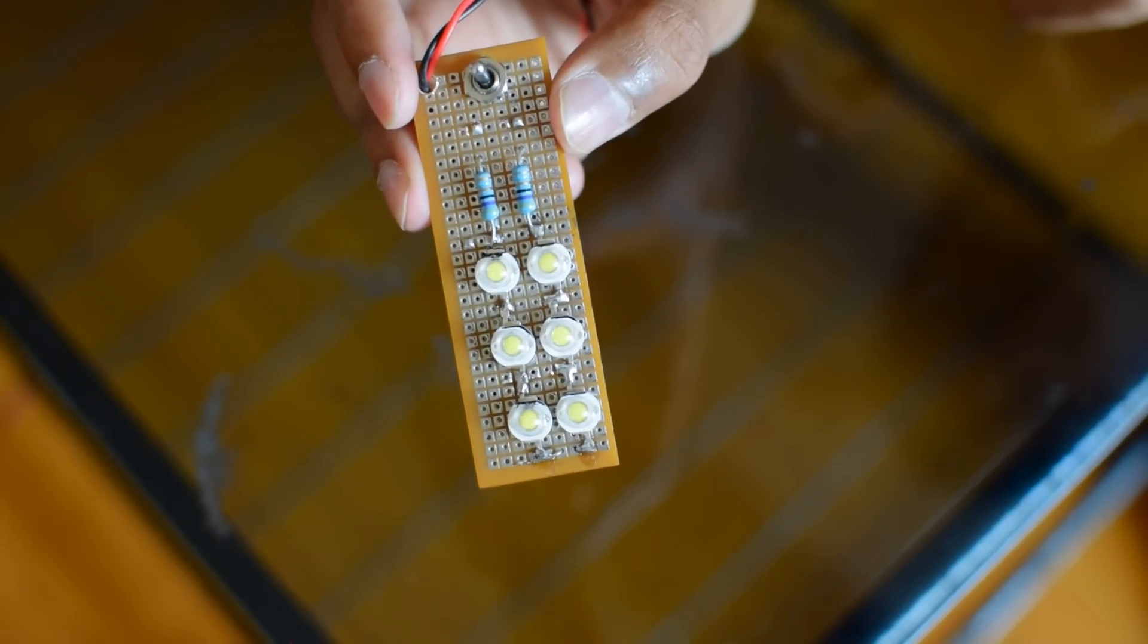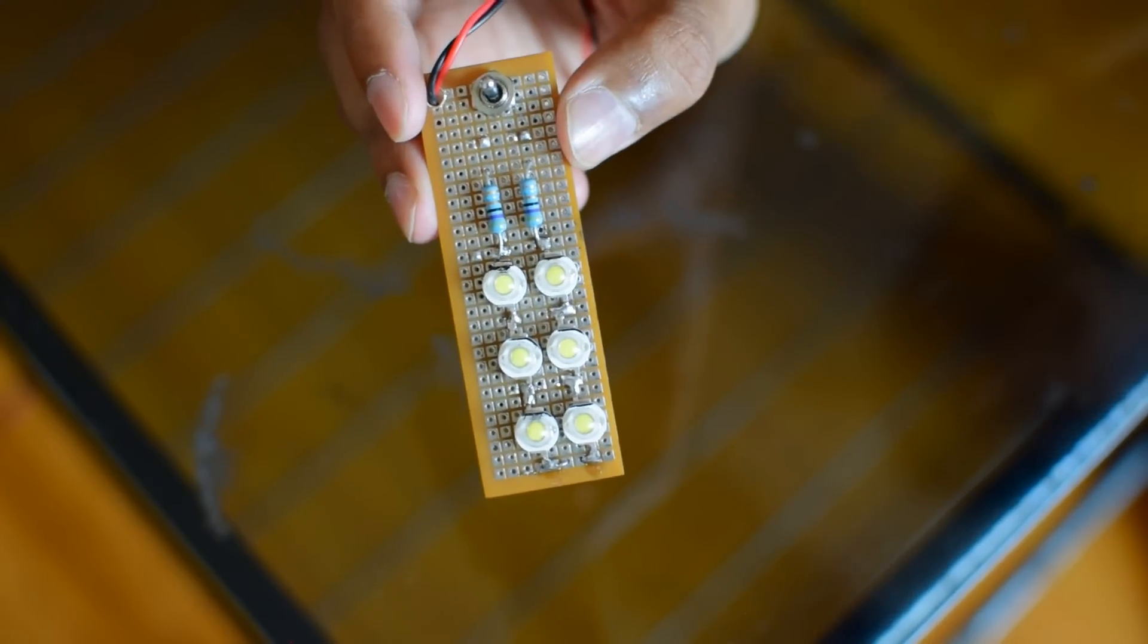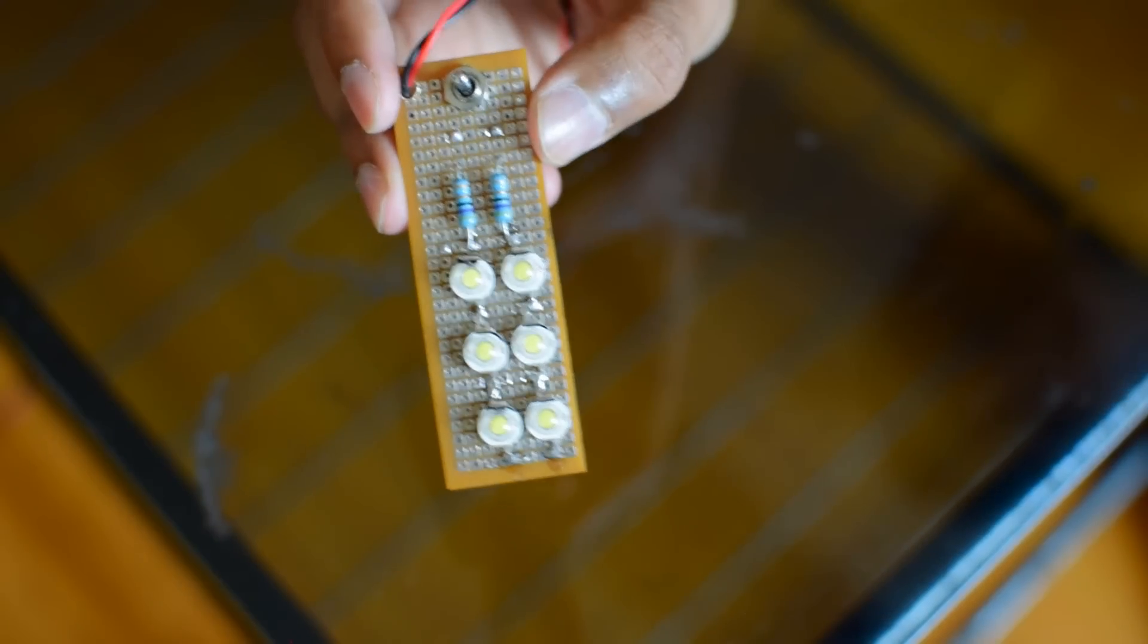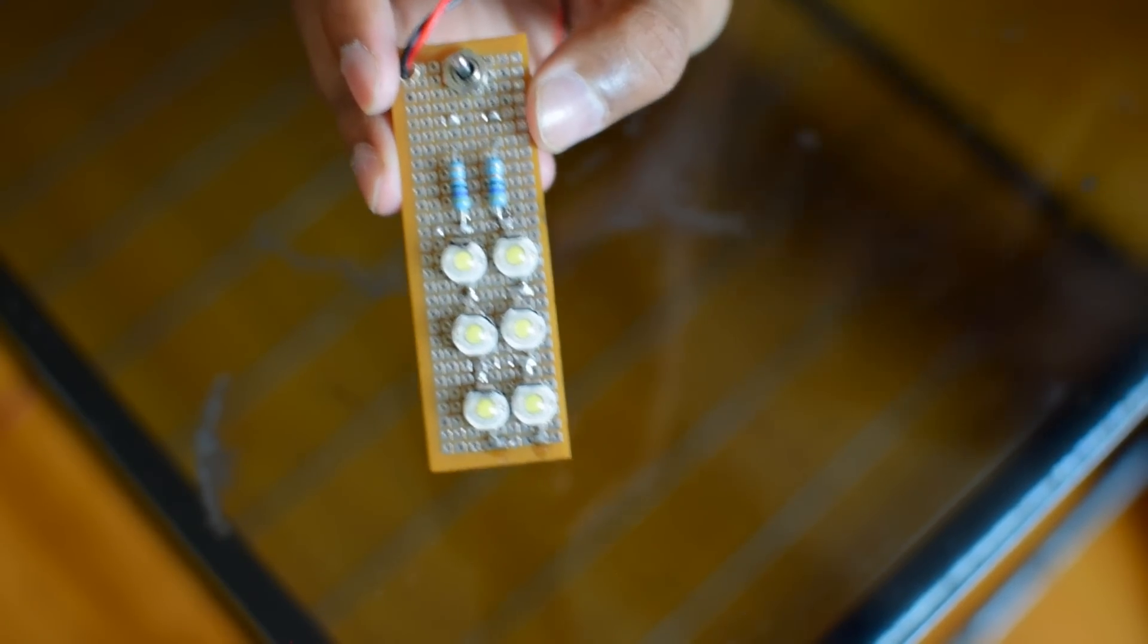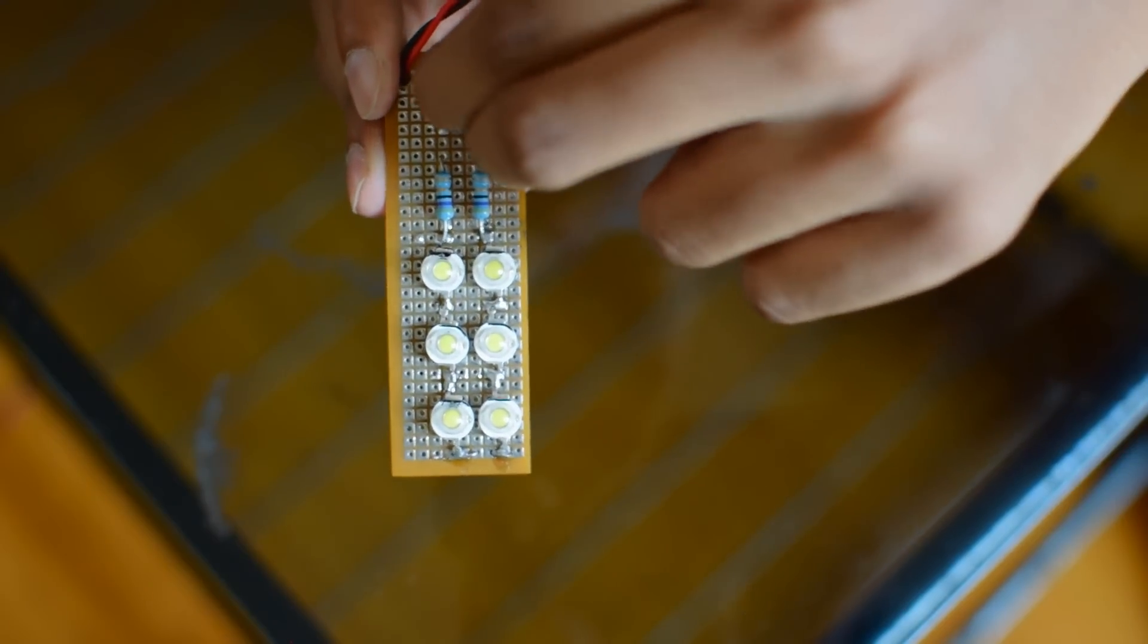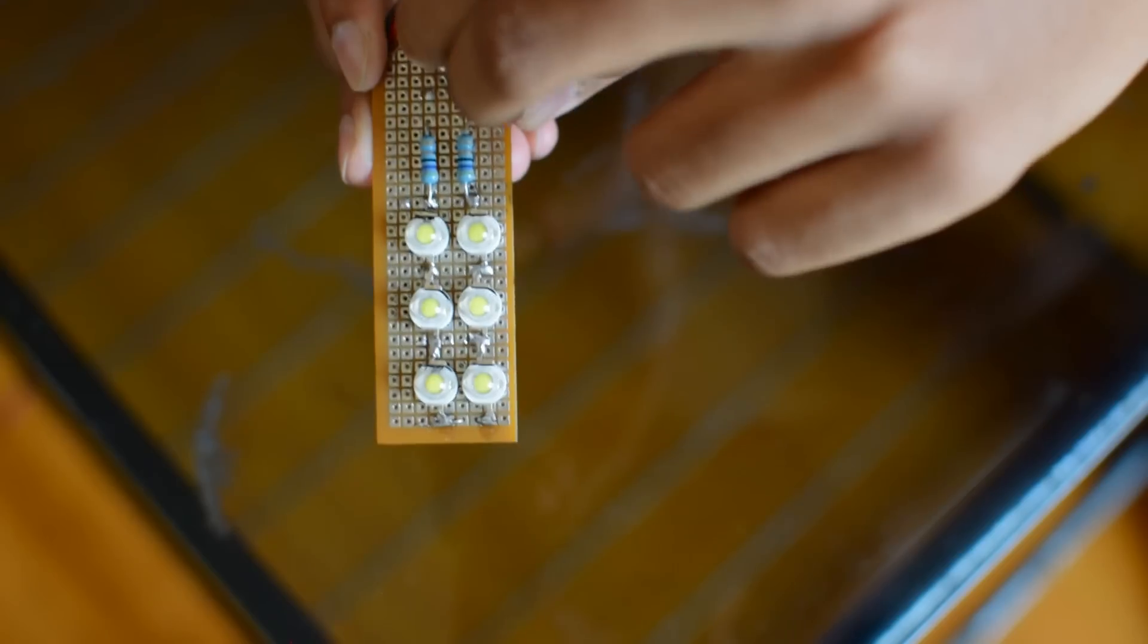This is the light panel. You can see 6 LEDs are connected in this way and these 2 are current limiting resistors. This one is a DPDT switch with a center off position. You can use this to turn the LEDs on in full power or half power mode.